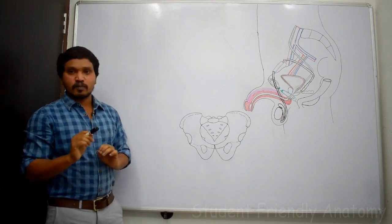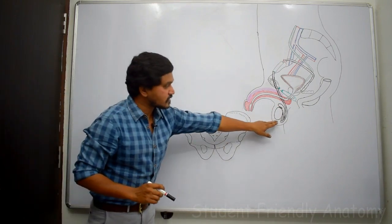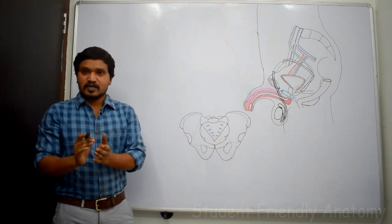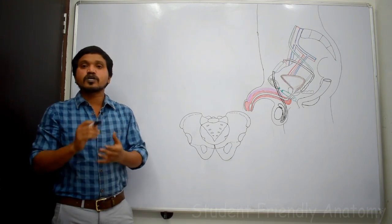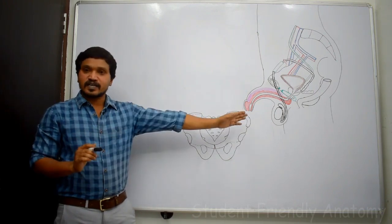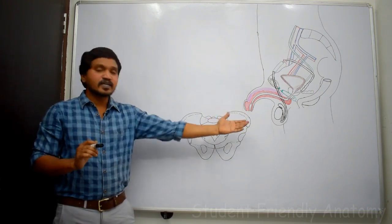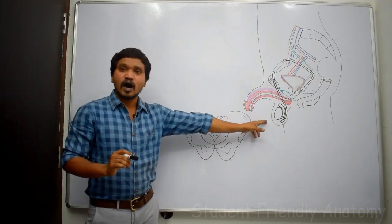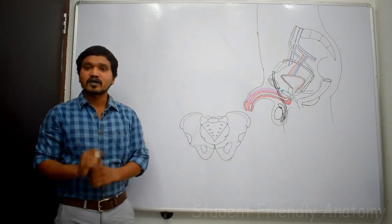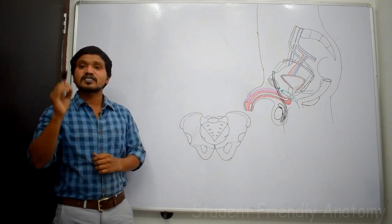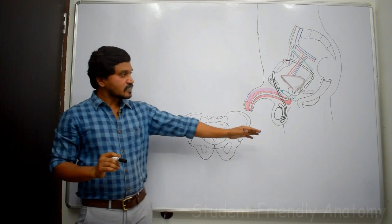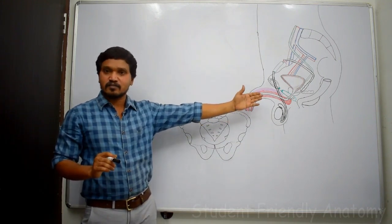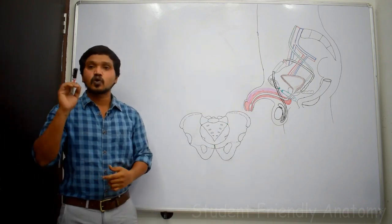We will discuss one by one. First, we will discuss about scrotal sac. Scrotal sac is a cutaneous bag which is present in the lower part of the abdomen and contains testis — both right and left testis. Why is scrotal sac present outside the abdominal cavity? Because spermatogenesis needs a lesser temperature. If the testis is present in the pelvic cavity, spermatogenesis cannot occur.